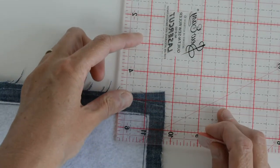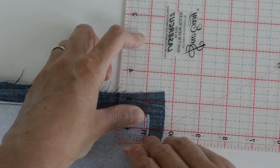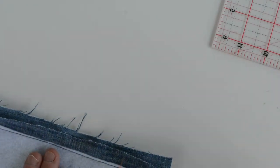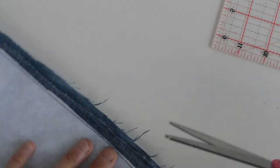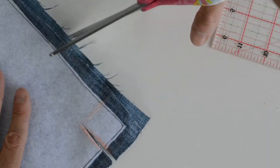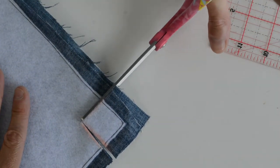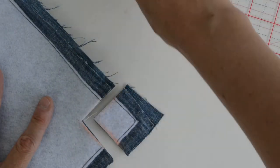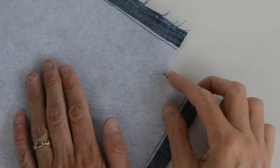Which is going to give me a half inch seam allowance. And I'm going to cut it out through both layers of the fabric. Like that. So we've cut our square out.